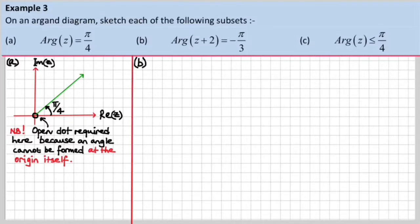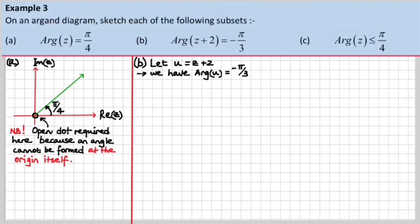Now this one is a little bit tricky because we've got z plus 2 in here, which makes it all a little bit of a conundrum. However, it's very, very easy if you just use the wolfman technique, which I'm about to show you. What we do is let whatever is in that bracket equal u, and everything becomes clear.